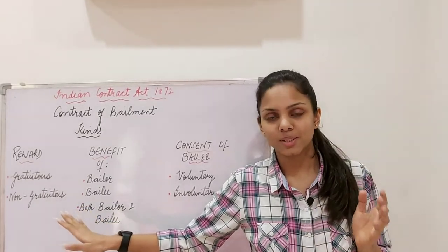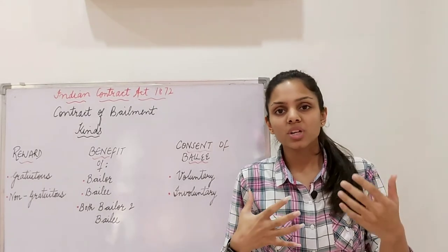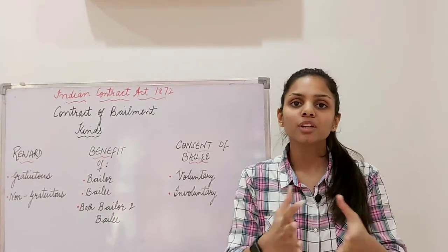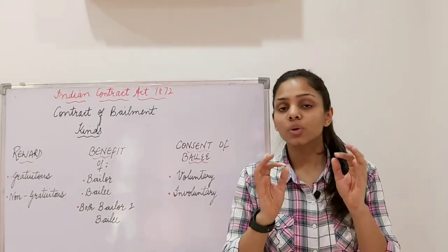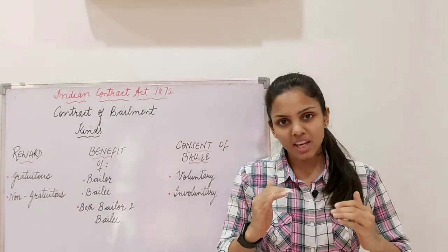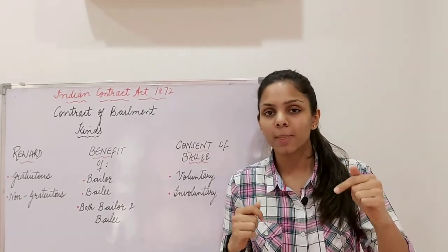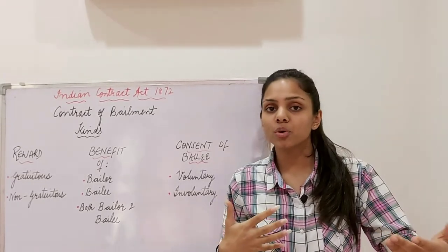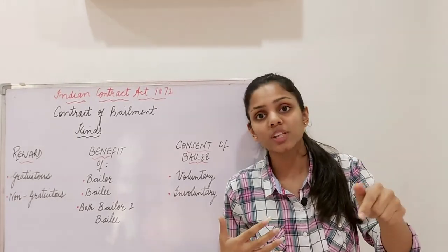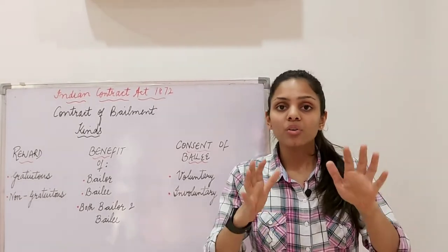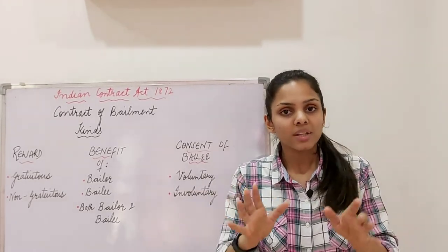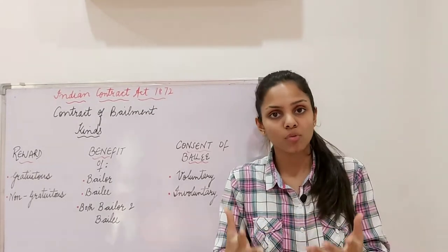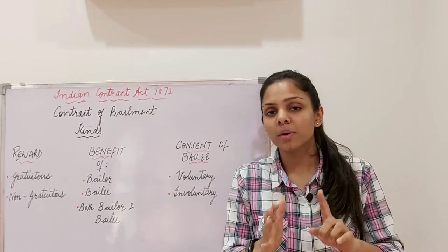For example, my friend came to me and said he wants to take my car for a day for an outing. I said, you are my friend, you can take it free of cost — gratuitously. I won't be charging any rent, not even a single penny. This gratuitous bailment was for the benefit of the bailee — my friend's benefit. He is the bailee, and if he had gone to the market he would have had to pay rent.